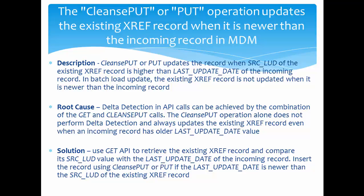This is the expected behavior of MDM. If you want cleansport or the PUT API to update using delta detection, you need to use the GET API. Using GET, pass the record values used for delta detection and check whether such a record exists with a matching last updated. If the existing record's last updated is less than the incoming record's last updated, then call cleansport or PUT to update the record. The root cause is that delta detection in API calls requires a combination of GET and cleansport calls.